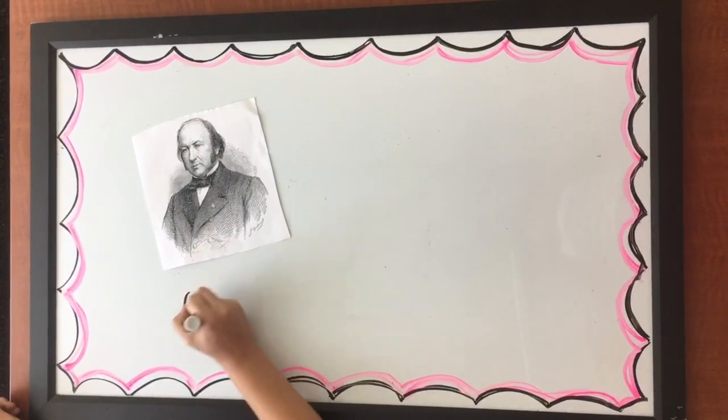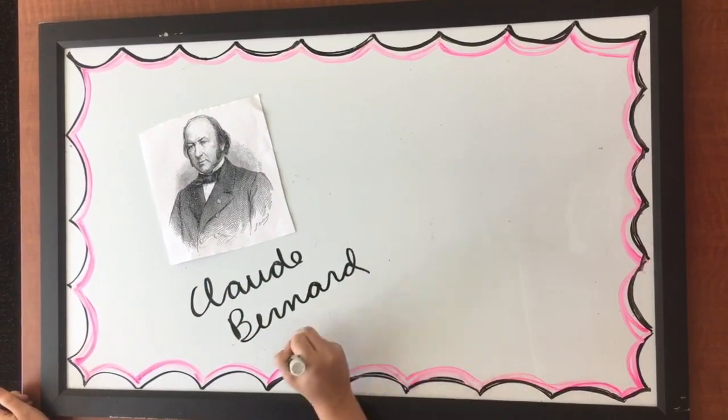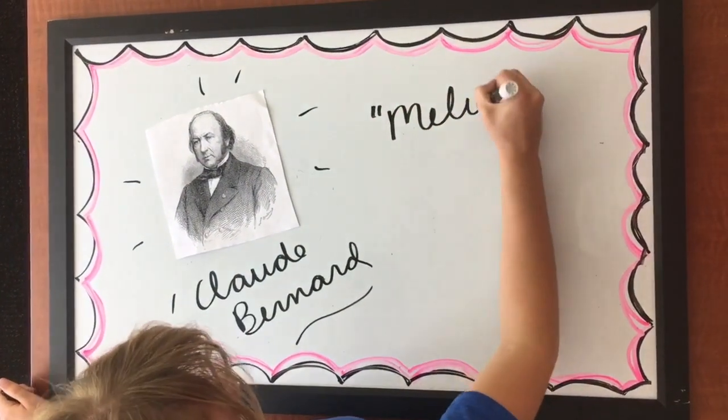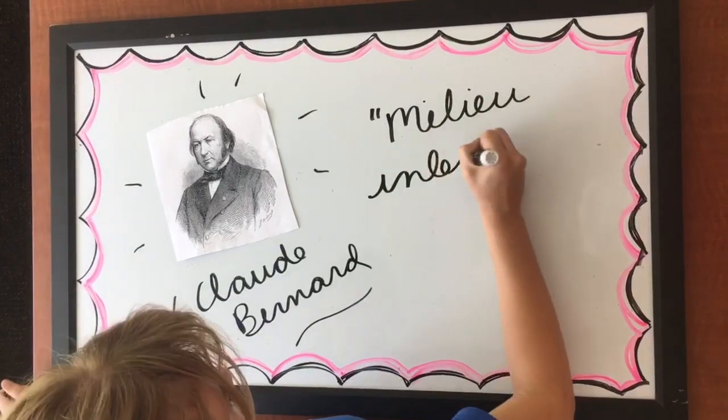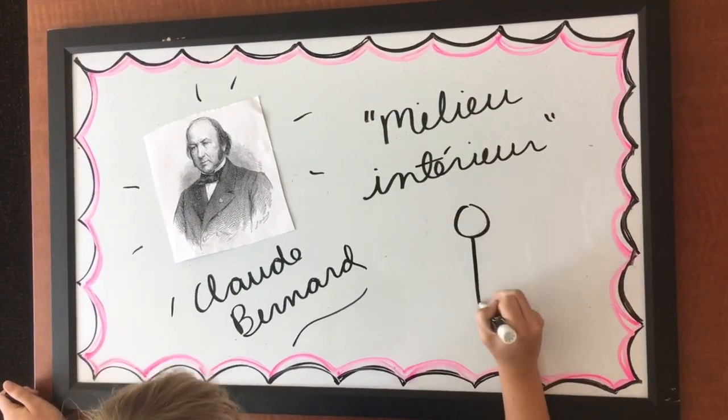Homeostasis was first explained by French physiologist Claude Bernard. Bernard described this idea as milieu interieur, the process of maintaining a constant internal environment despite the conditions of the external environment.